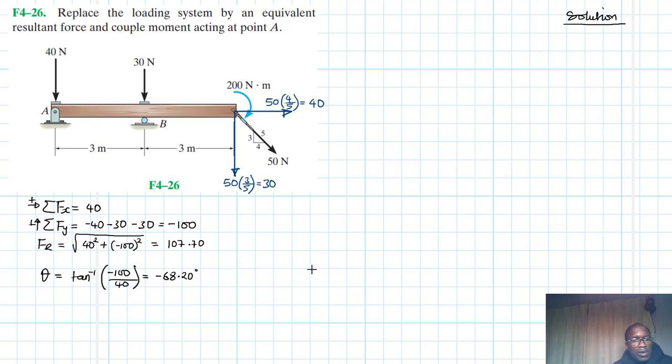Once we've done so, then we need to sum up the moments about point A, clockwise being our reference. 40 will not produce any moment about point A because the lever arm is equal to 0. 30 will produce a negative moment, so it will be 30 by 3. And then we have another 30 producing a moment about point A, which is 30 by 6.